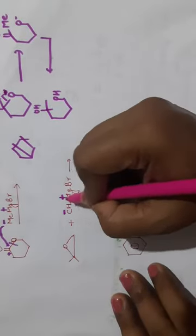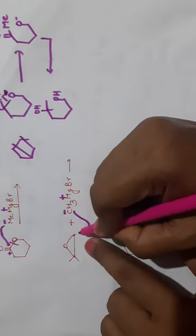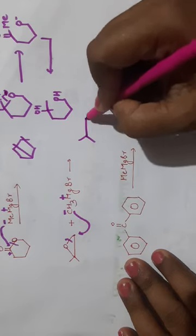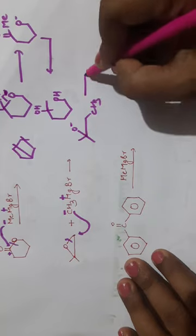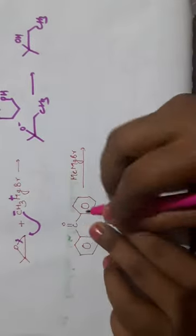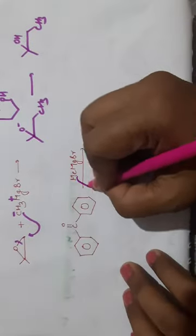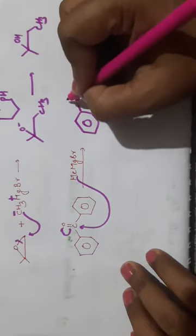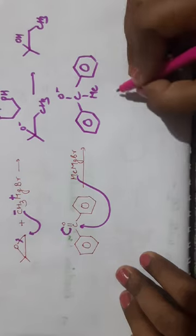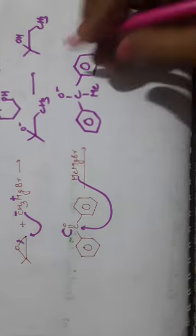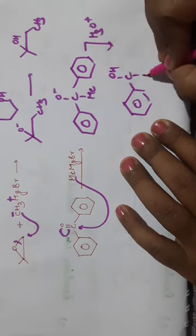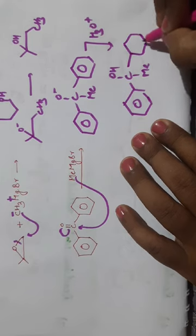Second test question: an epoxide — attack on the less hindered side gives an alkoxide, and on hydrolysis the product is a secondary alcohol with a CH₃ group. Third: a ketone with two flanking benzene rings (benzophenone) treated with methyl Grignard — the carbanion attacks the carbonyl carbon, the alkoxide is formed, and on hydrolysis the product is a tertiary alcohol Ph–C(OH)(CH₃)–Ph (with a methyl and two phenyl groups).